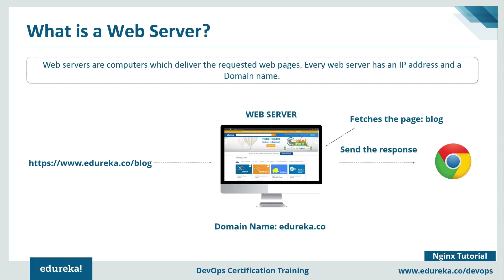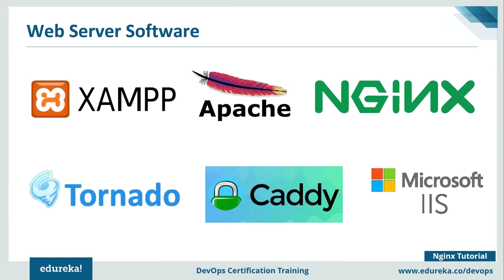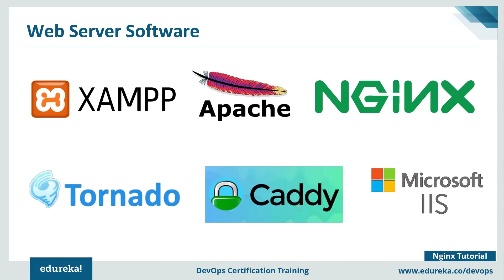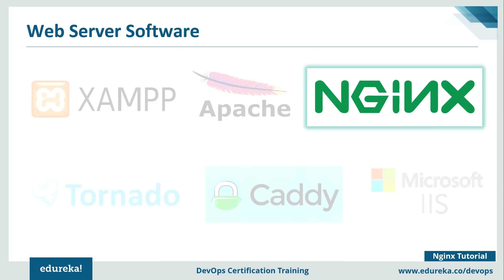Now that you've understood what a web server is, any computer can become a web server. You just have to install server software and connect the machine to the internet. In the market, there are various web server software such as XAMPP, Apache, Nginx, Tornado, Caddy, and Microsoft Internet Information Services. Since this session focuses on Nginx, we'll mainly focus on the Nginx server.